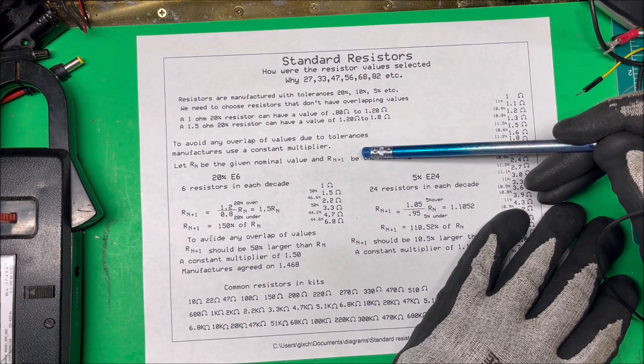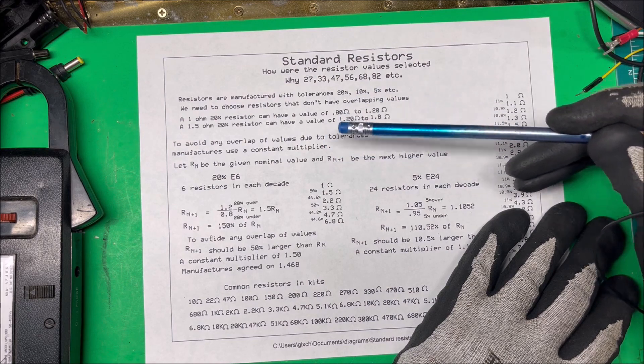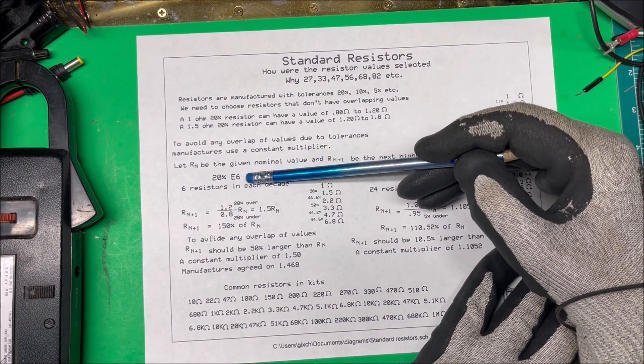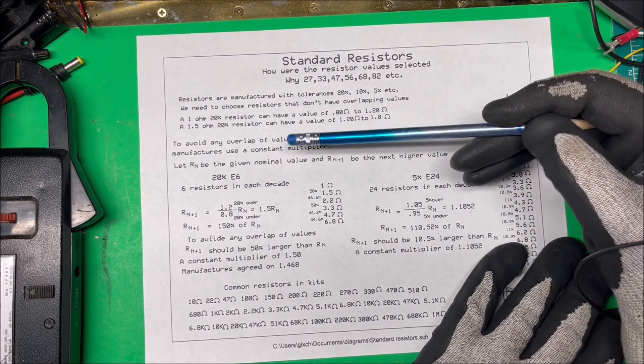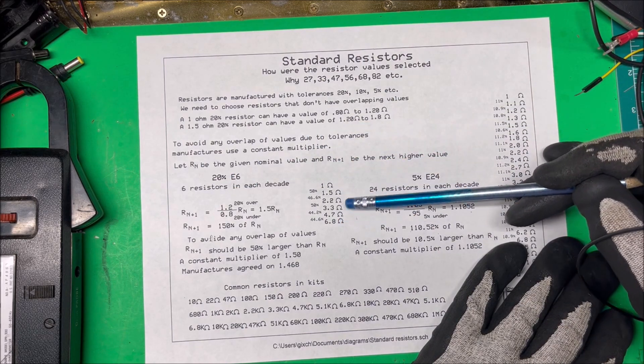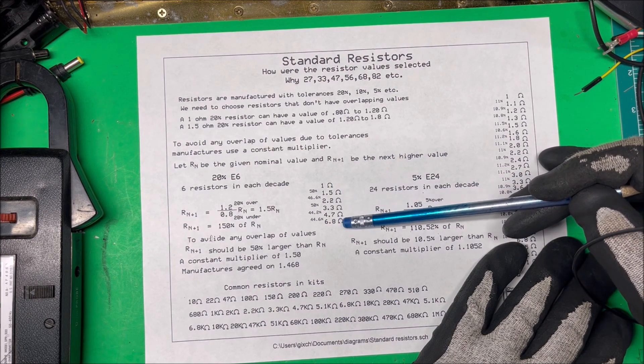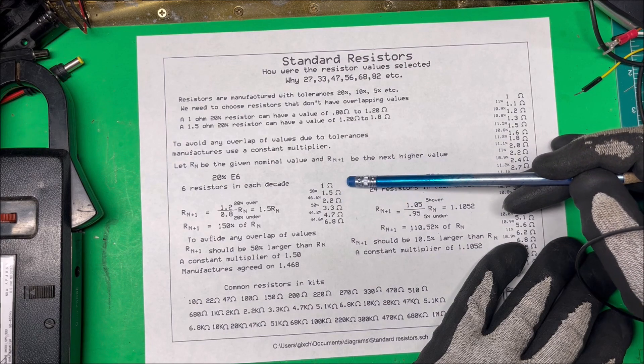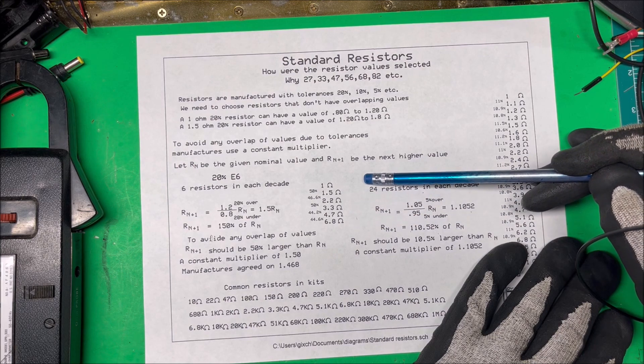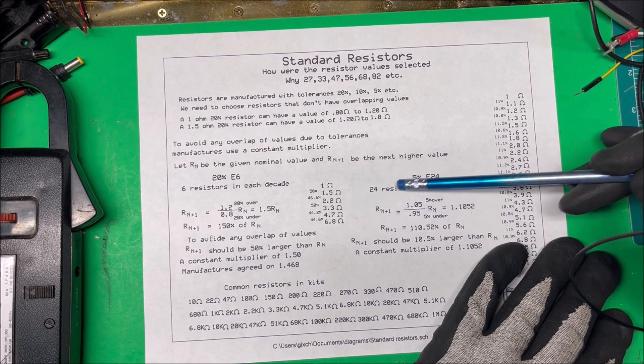To avoid any overlap values due to tolerances, manufacturers use a constant multiplier. The twenty percent tolerance is the E6 series - there's six resistors in each decade. They use the same numbers throughout all the decades, so you have 1, 1.5, 2.2, 3.3, 4.7, and 6.8, and then the next decade you have 10, 15, 22, 33, 47, 68, and then 100, 150, 220, 330, and so on all the way into the megaohm range.